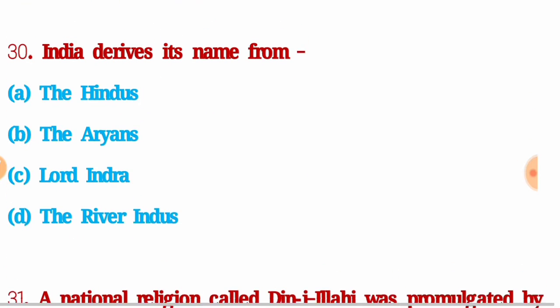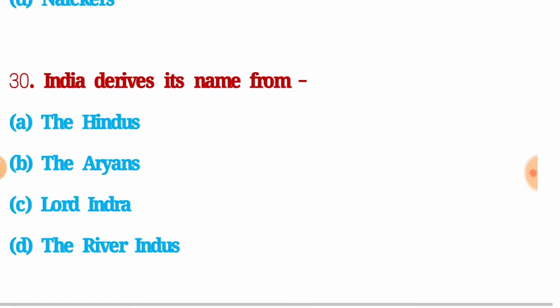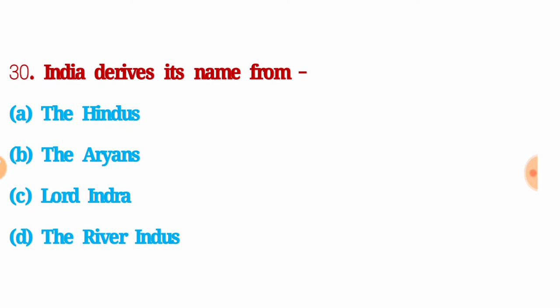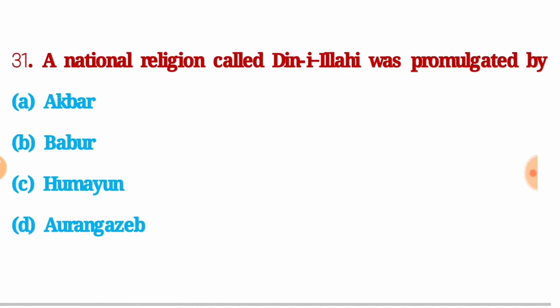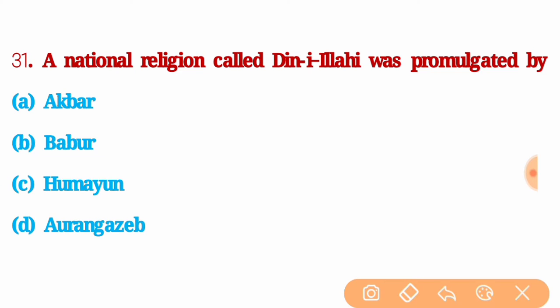Next question: India derives its name from — the right answer is option D: the river Indus. Next question: the national religion called Din-i-Ilahi was promulgated by — the right answer is option A: Akbar.